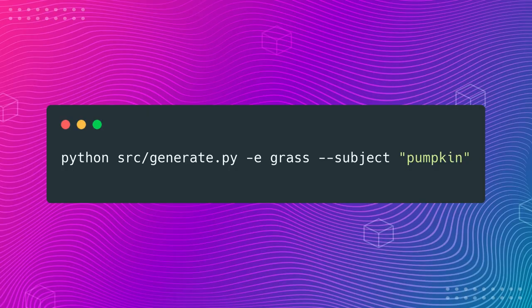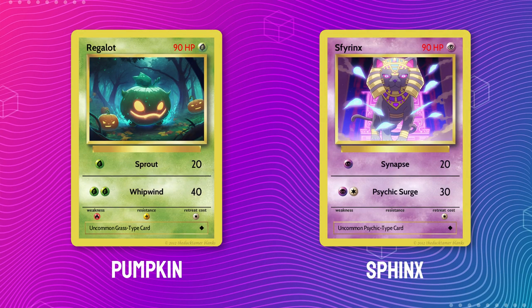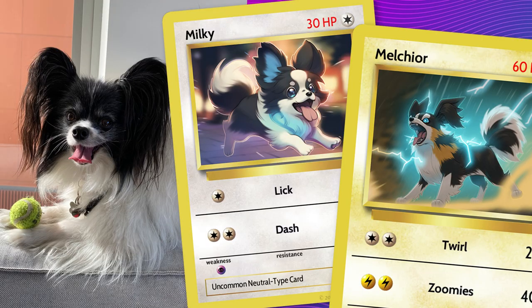You can use the artwork prompts generated for you with Midjourney to get unique artwork, then download those images and put them in a specific folder in the app so it can use that artwork to generate actual Pokemon card images. If you want even more control, you can pass in a custom subject type — anything you want, even not a real animal, like a pumpkin, a sphinx, or even your dog, which is a Papillon.